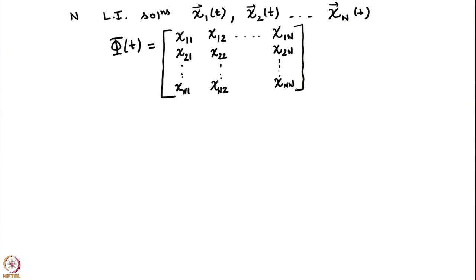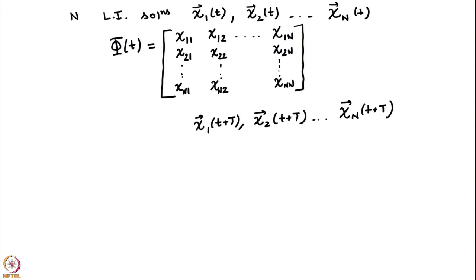We also know that if χ₁, χ₂, χ₃ up to χₙ are solutions to our system, we have just proved that χ₁(t+T), χ₂(t+T) up to χₙ(t+T) — each of these is also a solution to our system. We can form one more fundamental matrix φ(t+T) by arranging each of those as columns, just as we had done earlier.